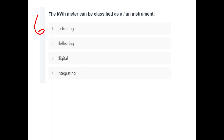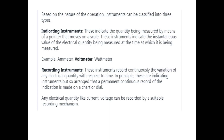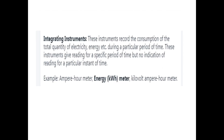The kilowatt hour meter can be classified as — what type of instrument? The kilowatt hour meter is an Integrating Instrument. Integrating instruments include the ampere hour meter, energy watt hour meter, and kilowatt hour meter.